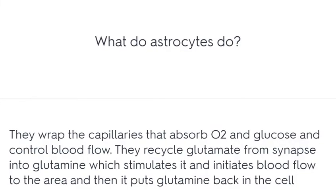What do astrocytes do? They wrap the capillaries that absorb O2 and glucose and control blood flow. They recycle glutamate from the synapse into glutamine, which stimulates it and initiates blood flow to the area, and then put glutamine back into the cell.